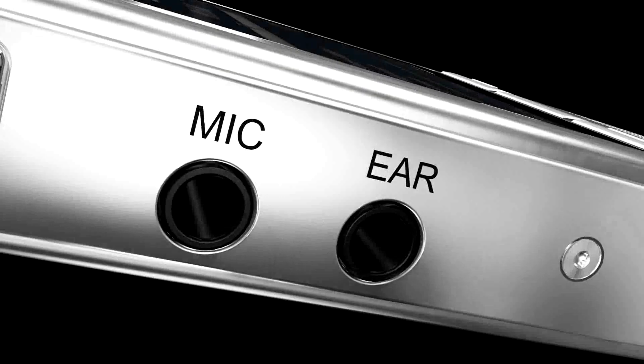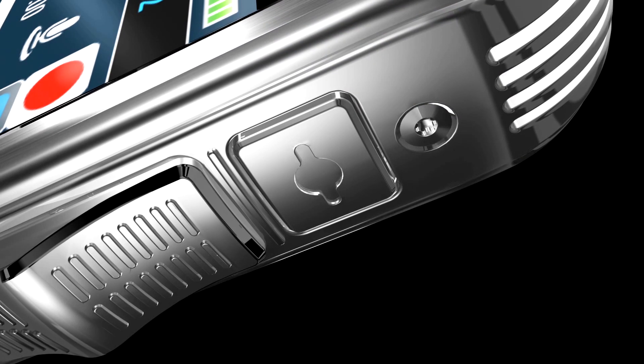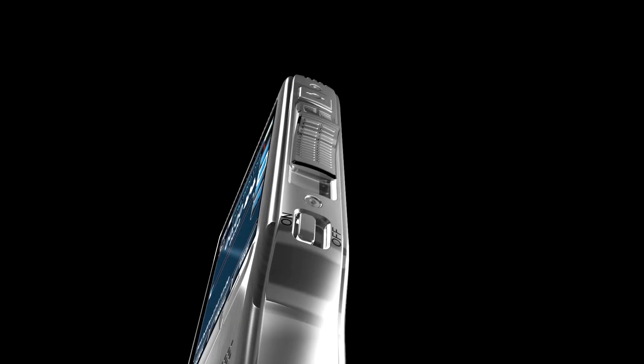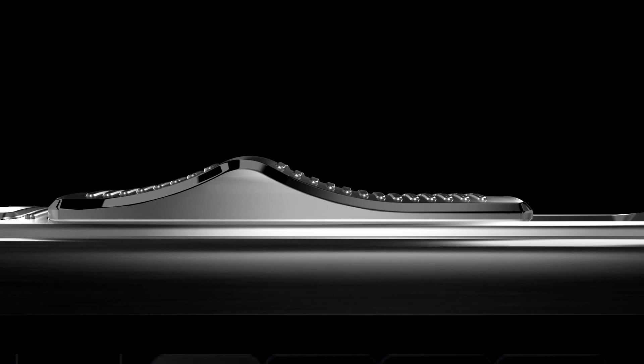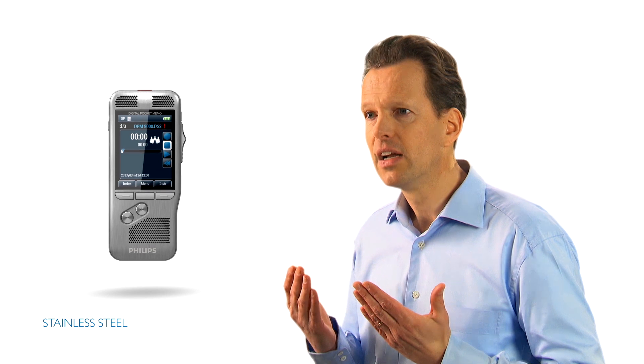Every detail important to users has been considered and used to completely redesign the Pocket Memo. Technology, materials, and technical parts used to craft this device were selected with the highest grade of precision, ensuring the highest product quality. The new Pocket Memo is made from ultra-durable stainless steel, which creates a robust protective shell around the device.